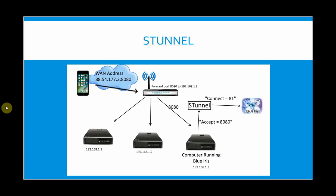Here's the networking flow: from a smartphone or browser, you connect to your BlueIris server from outside your local area network using your public IP address and port 8080. Your router forwards port 8080 to the BlueIris machine on your local network. STunnel picks up that request on the Accept port 8080, encrypts the connection, and forwards it to the BlueIris web server port via the connect equals 81 command.